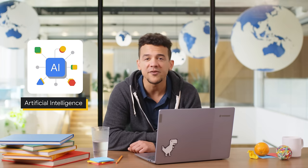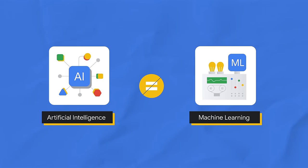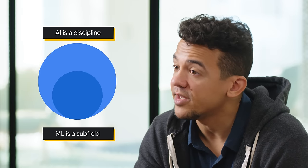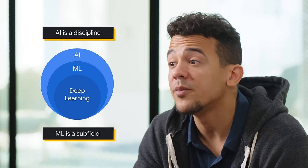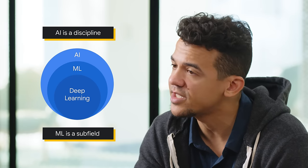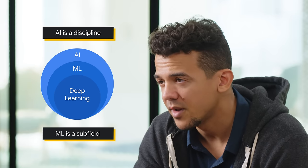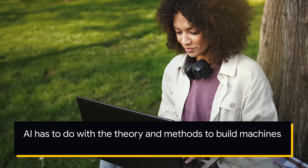Since we are going to explore generative artificial intelligence, let's provide a bit of context. Two very common questions asked are: what is artificial intelligence, and what is the difference between AI and machine learning? So one way to think about it is that AI is a discipline, like how physics is a discipline of science. AI is a branch of computer science that deals with the creation of intelligent agents — systems that can reason, learn, and act autonomously. Essentially, AI has to do with the theory and methods to build machines that think and act like humans.